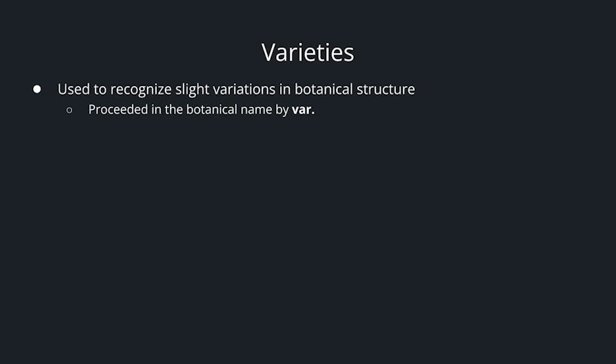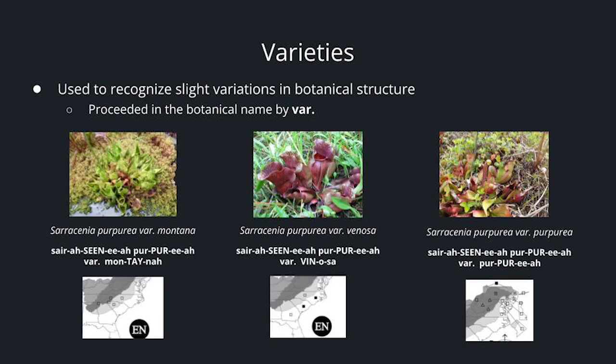Varieties are used to recognize slight variations in botanical structure, preceded in the botanical name by var. Looking at Sarracenia purpurea: the variety montana has a range more in the mountains. Sarracenia purpurea var. venosa is more of a coastal species — those typically have pitchers larger in diameter and fewer of them, and venosa actually translates to the color of wine. And then the variety purpurea is much more widespread, more present in the northeastern portion of the southeast, with pitchers that are more horizontal to the ground.